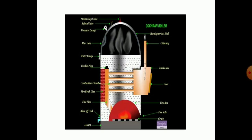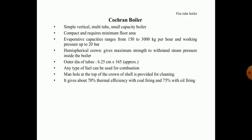In front of your screen, the pictorial view of a fire tube boiler is shown, depicting the parts, tubes, chimney locations, cross-sectional area, and at the top head the crown-shaped area containing high-pressure, high-temperature steam. The Cochran boiler is a vertical, multi-tube, small-capacity boiler which is compact and requires minimum floor area. It has an evaporative capacity ranging from 150 to 3000 kg per hour, while working pressure is up to 20 bar. The hemispherical crown gives maximum strength to withstand the steam pressure inside the boiler.